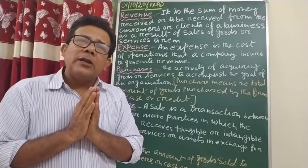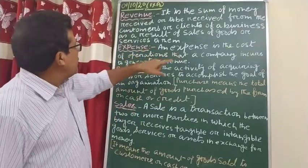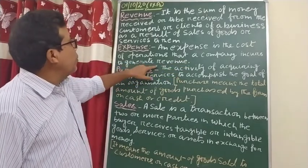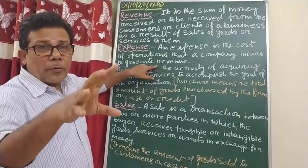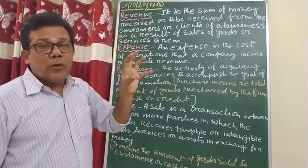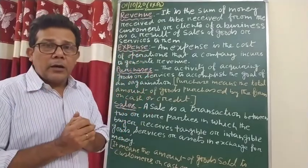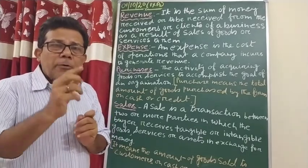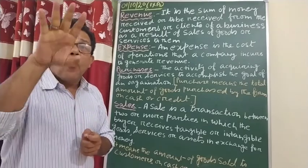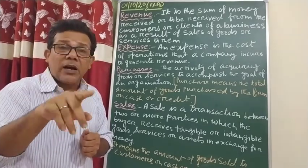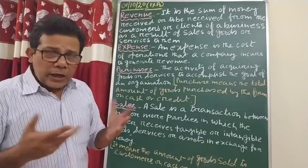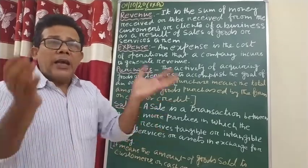The definition of expense: expense is the cost of operations that a company incurs to generate revenue. Whenever you are going to do some production, that spending is the expense. Expense is always related to revenue. For example, if someone is making samosas to sell them and earn money — to earn revenue — whatever money he spent to make those samosas is his expense: the flour, the potatoes, and all those ingredients he used. Then he sells them. That is what is called expense.